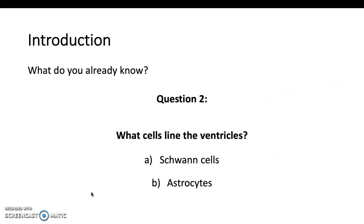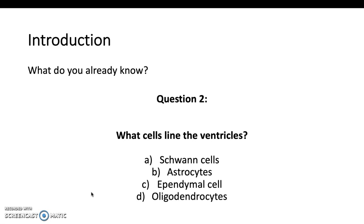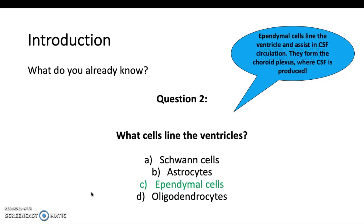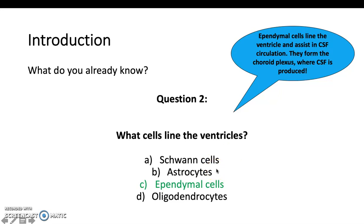Next question: what cells line the ventricles? Schwann cells, astrocytes, ependymal cells, or oligodendrocytes? The answer is ependymal cells — they line the ventricles, assist in CSF circulation, and form the choroid plexus where CSF is produced. Schwann cells form the myelin sheath on peripheral axons. Astrocytes are glial cells in the CNS associated with cerebral synapses. Oligodendrocytes are also CNS glial cells with a supportive and insulative mechanism — similar to Schwann cells but centrally.